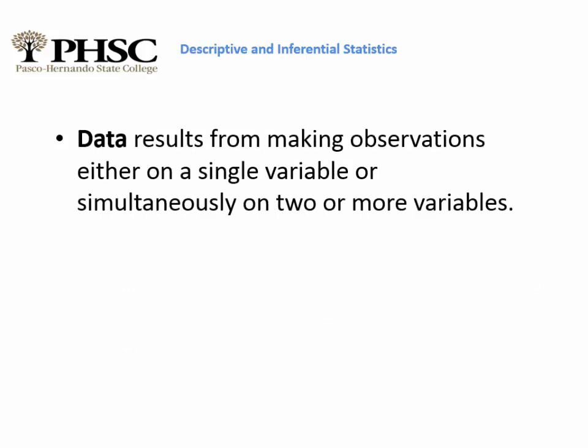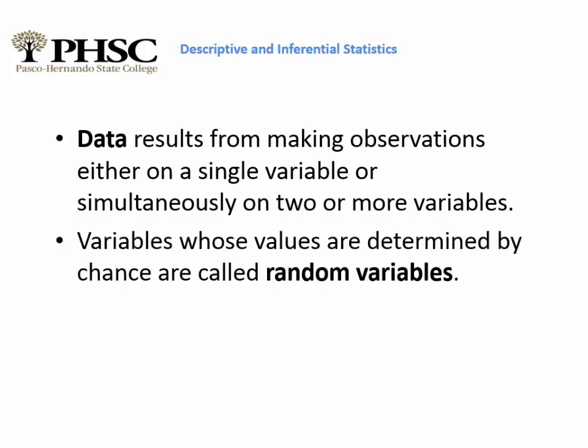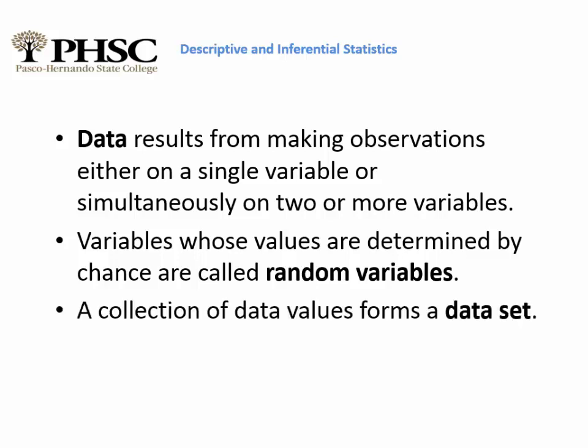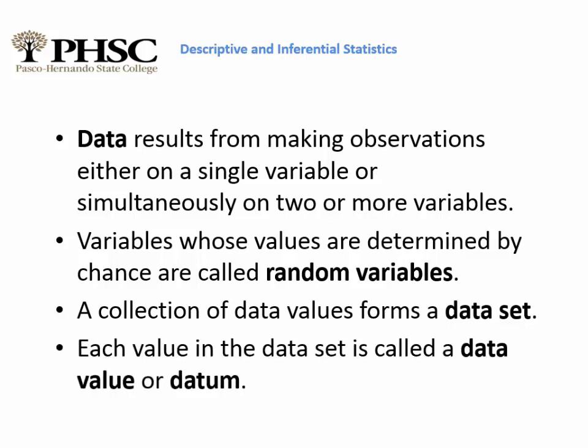Data results from making observations, either on a single variable or simultaneously on two or more variables. In this course, we'll be doing single variables and then two variables — we won't be dealing with more than two. Variables whose values are determined by chance are called random variables, and we'll talk about that more in Unit 3. A collection of data values forms a data set, and each value in a data set is called a data value or datum.